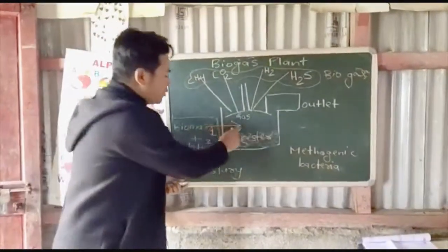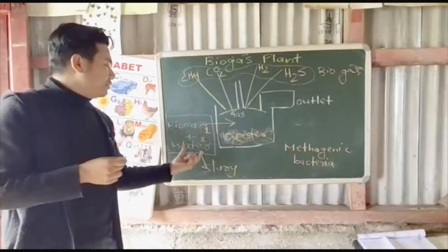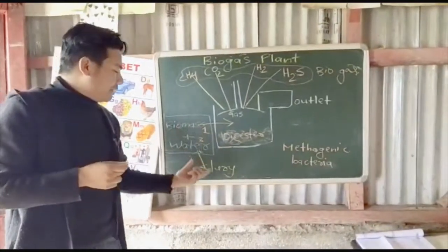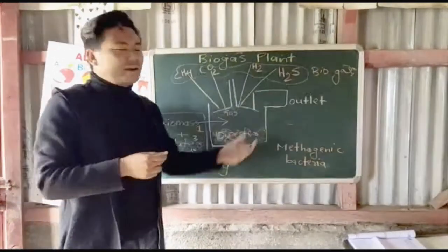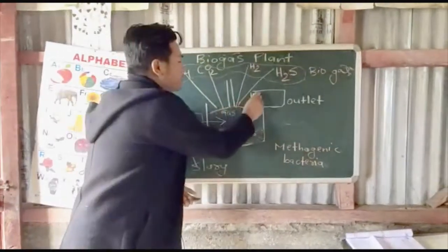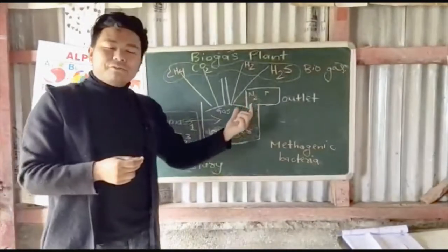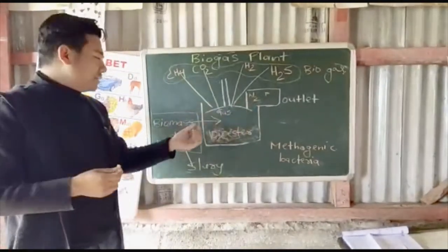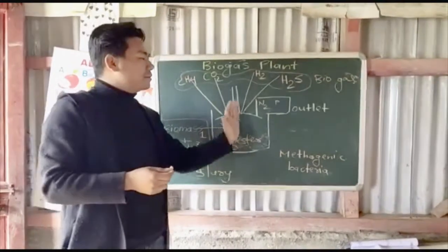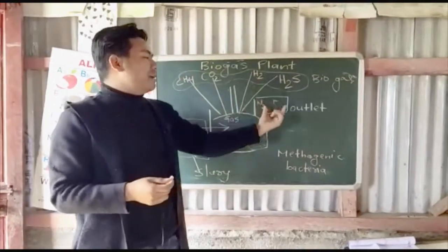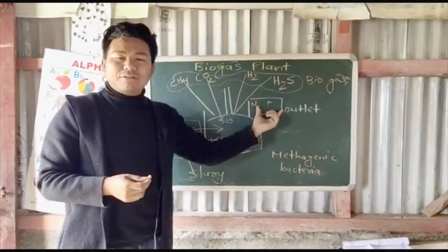There is another byproduct from the biogas plant. The remaining biomass and water mixture from the digester is called slurry. This slurry is very rich in nitrogen and phosphorus, and what comes out at the outlet of the digester becomes a very good manure for agriculture.